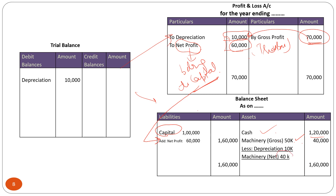The remaining balance of the machinery is rupees 40,000, which we have shown here. The total of the liabilities side and the assets side both come to rupees 1,60,000. That's all about depreciation — thank you so much for listening.